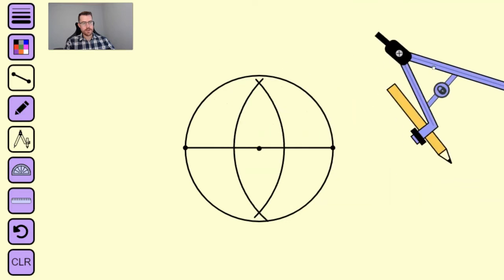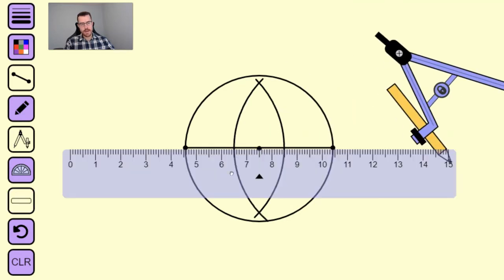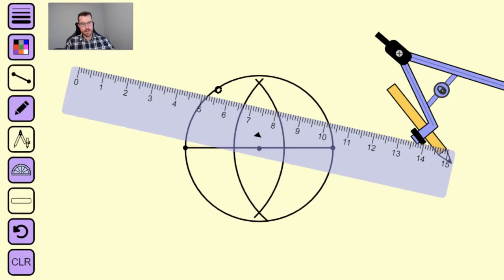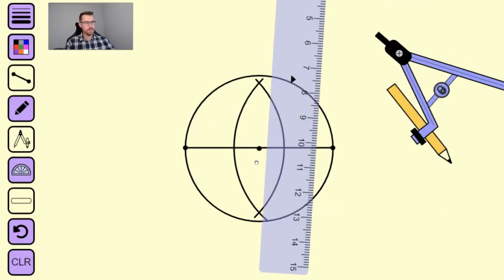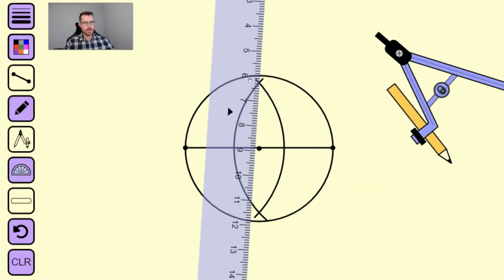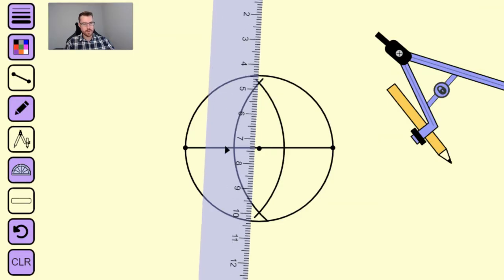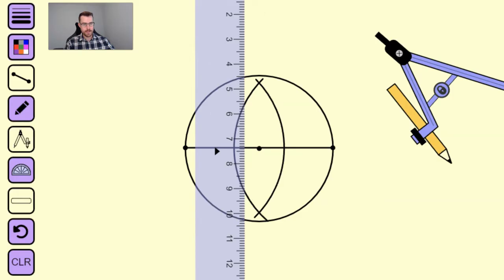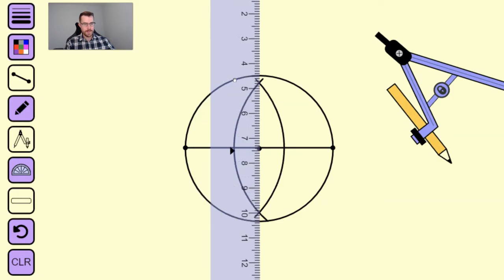Now grab your straight edge and rotate it to make sure it goes through both intersection points. Line it up so it's nice and straight going through both points, then draw a line straight through that and hit your circle at two points.